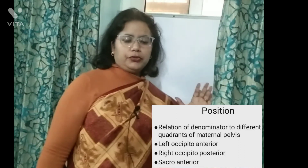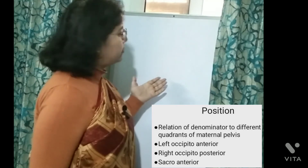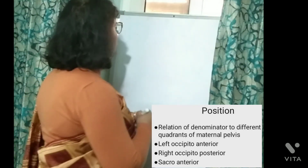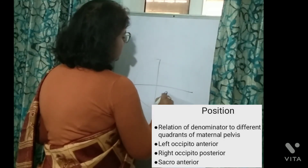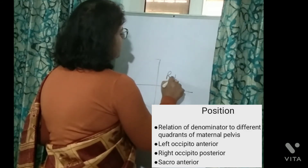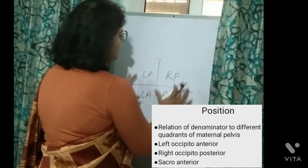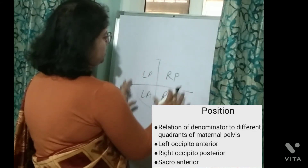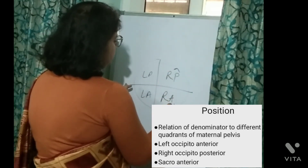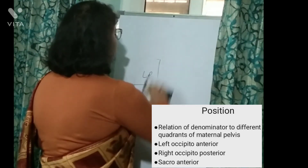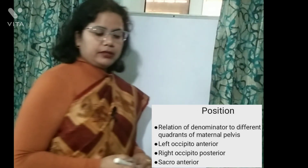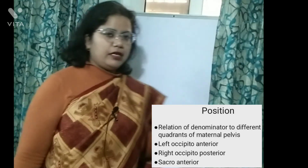What is position? It is the relationship of the denominator to the different quadrants of the maternal pelvis. The pelvis has right anterior, right posterior, left posterior, and left anterior quadrants. Wherever the denominator is facing, that defines the position. The most common example is left occipital anterior. Other examples include right occipital posterior or sacro-anterior. These are the important terms every obstetric student must know.